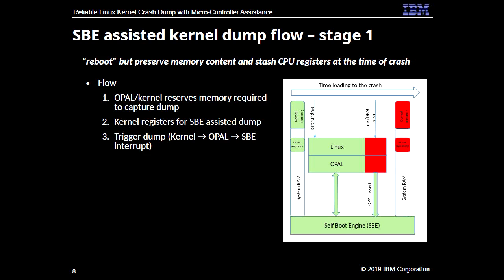Flow-wise: once OPAL and the host Linux kernel boot, we set aside the memory required to preserve the firmware dump as well as the kernel dump. On stage 2, the kernel registers for the SBE-assisted dump. On stage 3, once the Linux kernel crashes or the firmware crashes - or you can trigger manually for testing - we trigger the dump, which goes through kernel to OPAL, and OPAL interrupts the SBE saying it has crashed and to start capturing the dumps. The red boxes in the diagram are the reserved memories to capture the dump, and there are various ways to calculate how much memory is required.